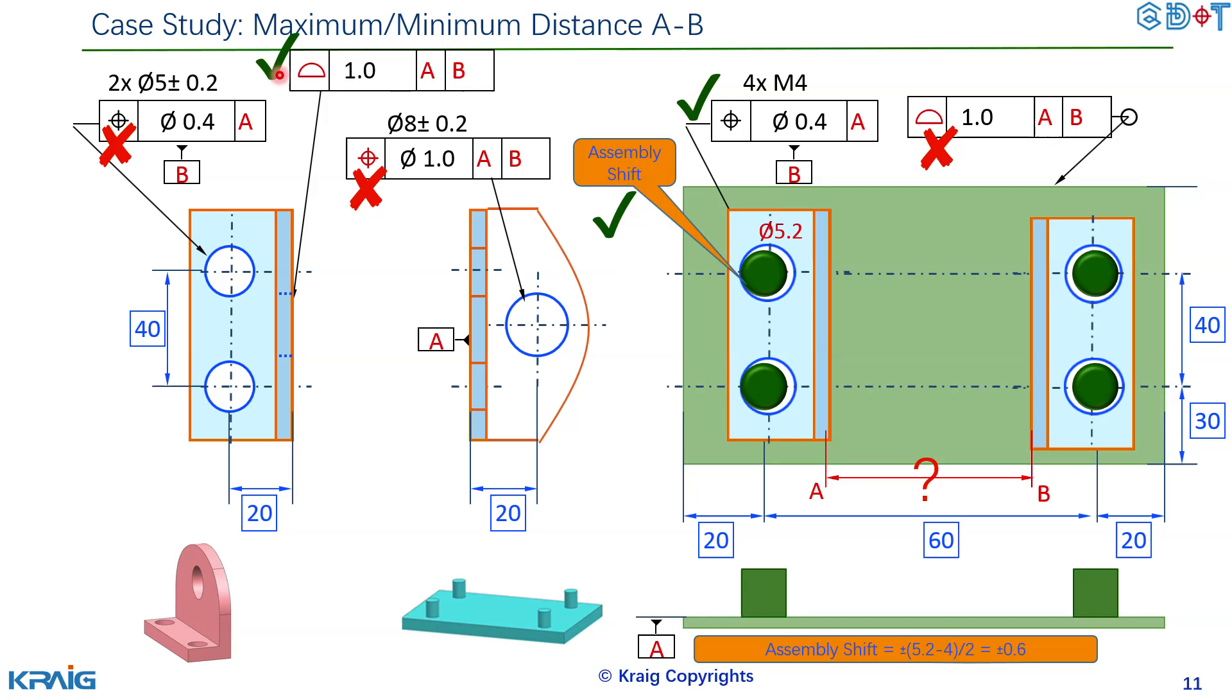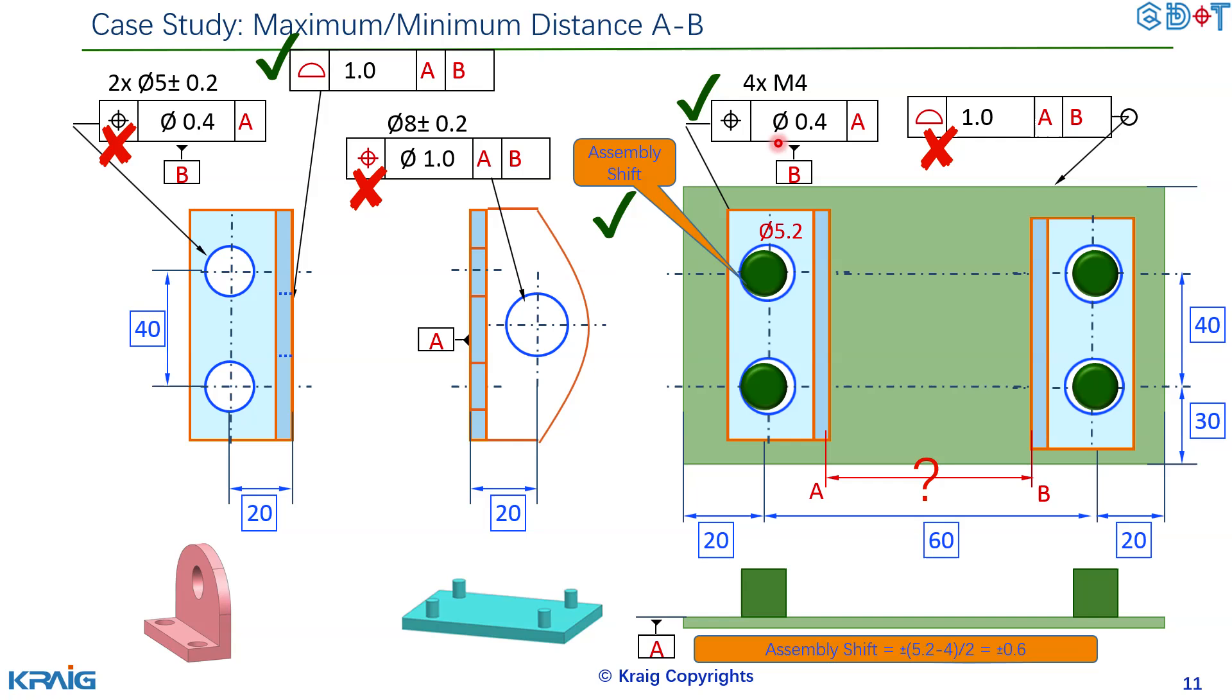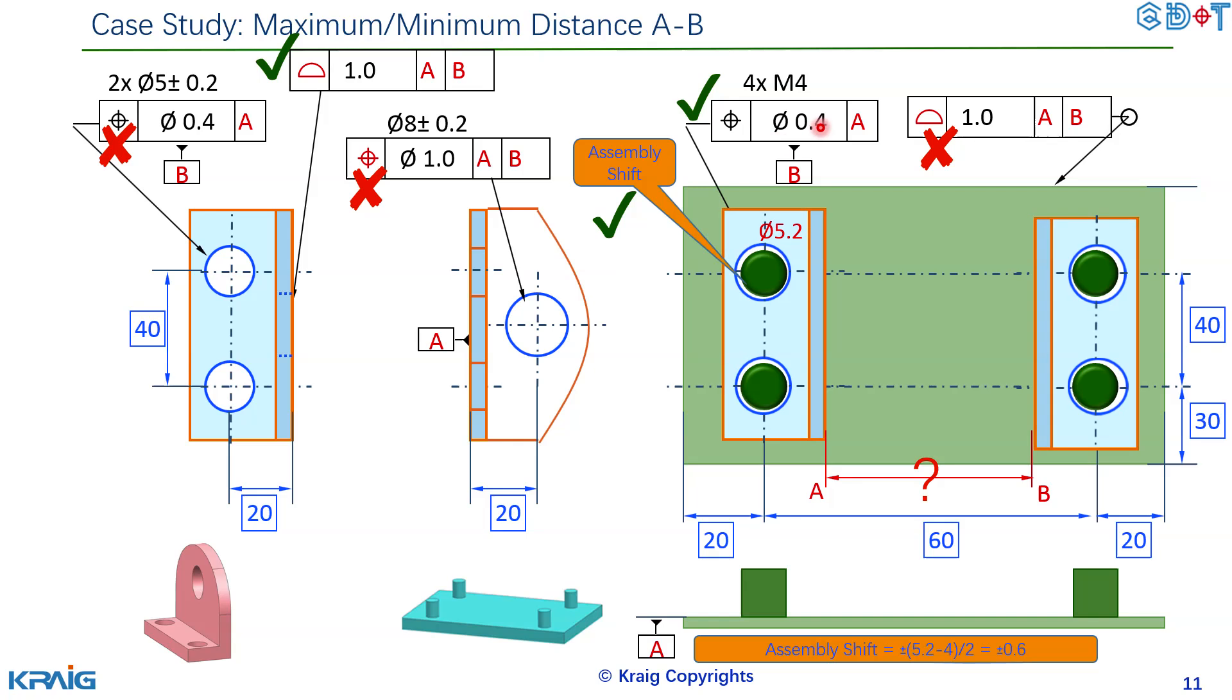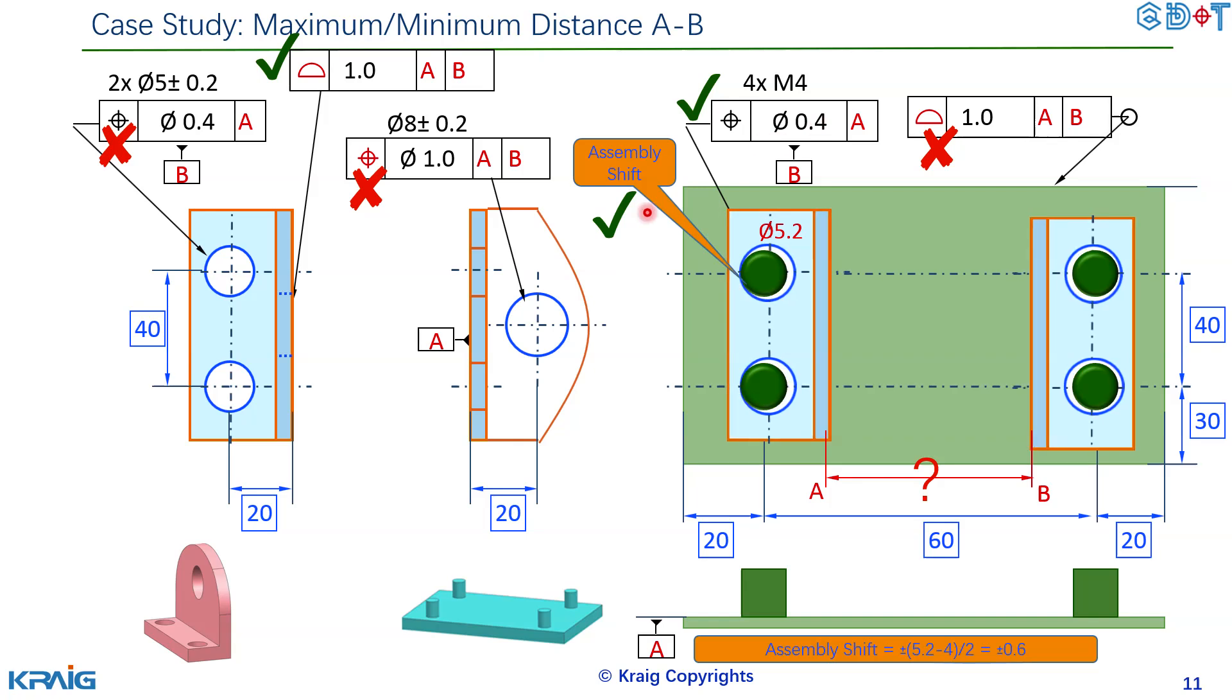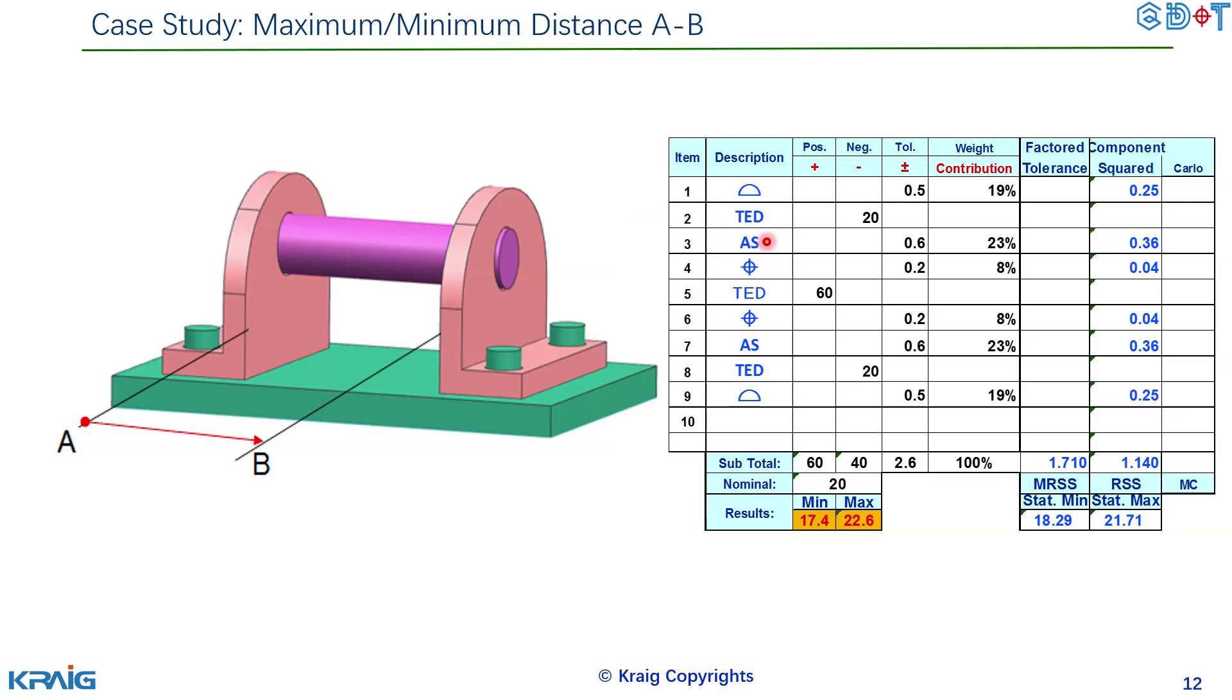So you can see number one profile times two and number two there's a position tolerance and lastly there's an assembly shift. That's all you need to consider and then you put it in the tolerance stack up form and then you get the result.